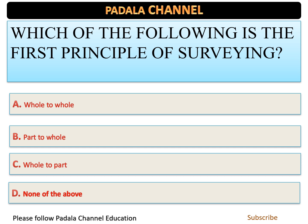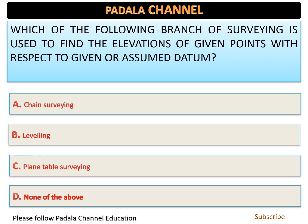Which of the following is the first principle of surveying? This is a very important question that appears frequently in exams. The correct answer is 'whole to part' — working from the whole to the part is the right answer.